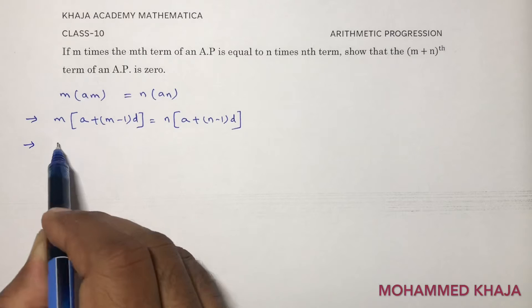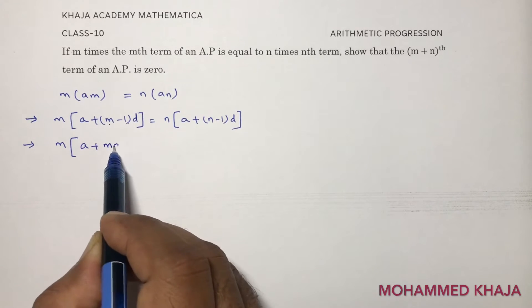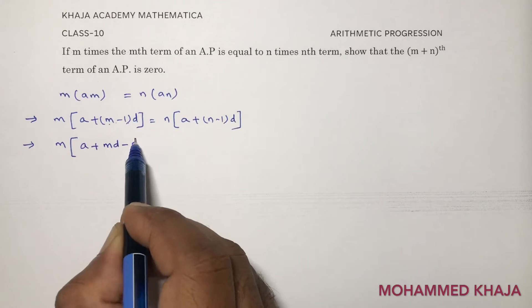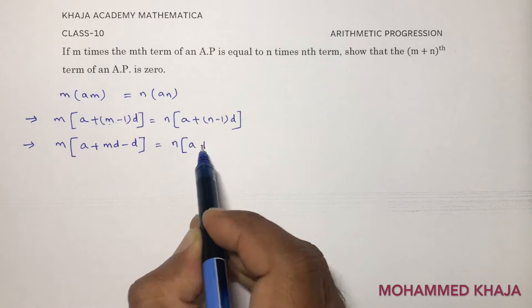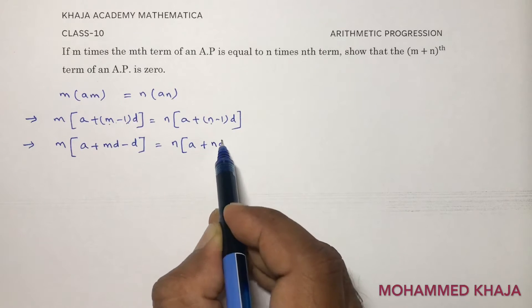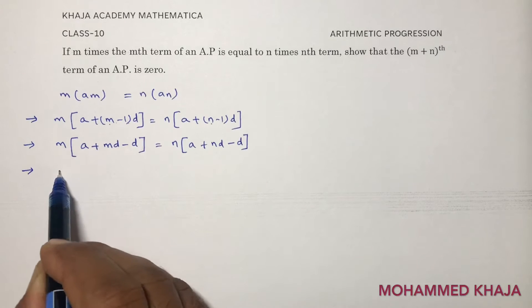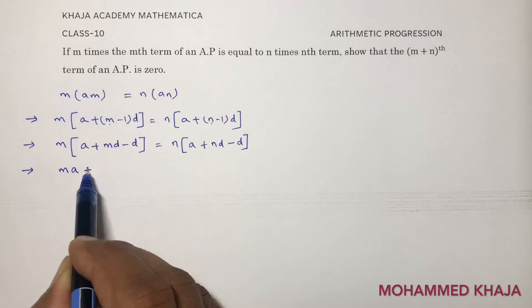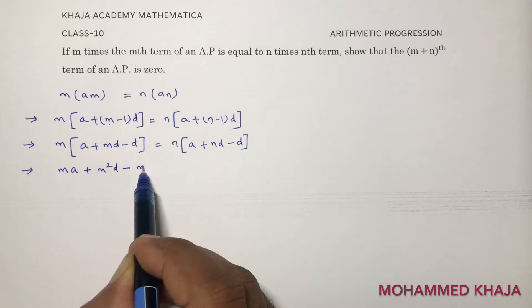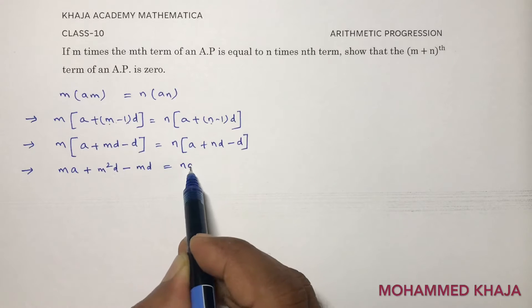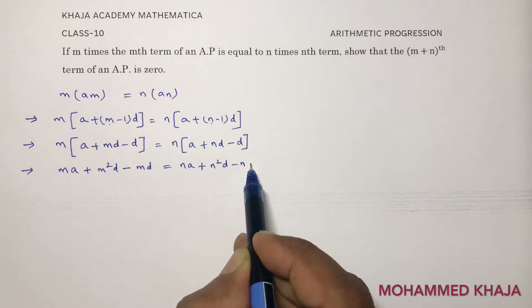Next, expanding: m into a plus m times d minus d equals n into a plus n times d minus d. Multiplying out: ma + m²d − md equals na + n²d − nd.